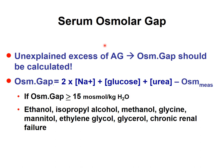Anion gap acidosis can result from externally ingested substances metabolized in the body, such as ethanol, methanol, or isopropyl alcohol. To determine whether the patient ingested something, the serum osmotic gap is useful. Normally, osmolality is calculated as twice the sodium plus glucose plus urea. If measured osmolality exceeds calculated osmolality by more than about 10 mOsm/kg, the osmotic gap is increased, suggesting the patient took something from outside.